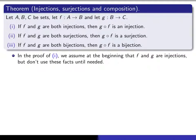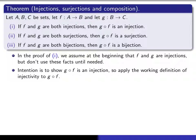I'm only going to do the proof of parts one and three, and I'm going to leave two as an exercise for you. For part one, you assume that f and g are injections, but you won't use those facts until you actually need them. Your intention is to deduce that f composed with g is an injection, so you should directly apply the working definition of injection to f composed with g, and along the way you'll make use of the fact that f and g are both injections.